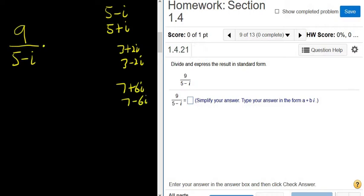Step 1, multiply by 5 plus i over 5 plus i. We're allowed to do this because this actually cancels and it's equal to 1. That's why we're allowed to multiply. We're basically multiplying by 1.